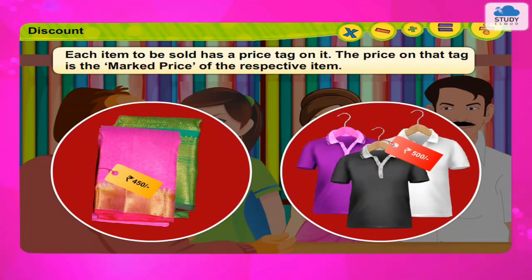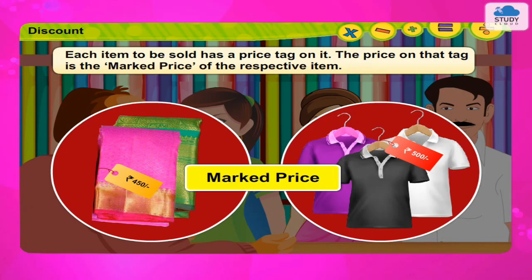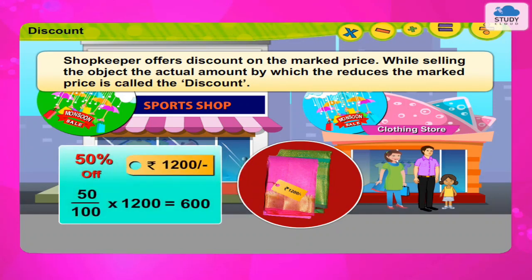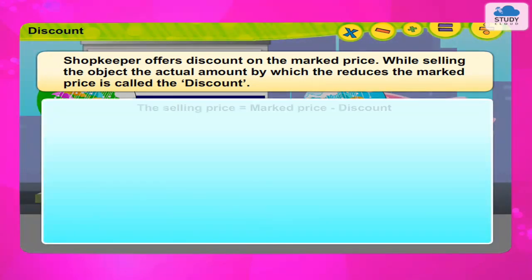Each item to be sold has a price tag on it. The price on that tag is the marked price of the respective item. The shopkeeper offers a discount on the marked price while selling the object; the actual amount by which the marked price is reduced is called the discount. Hence, the selling price is equal to marked price minus discount.